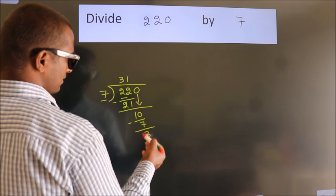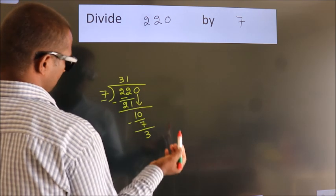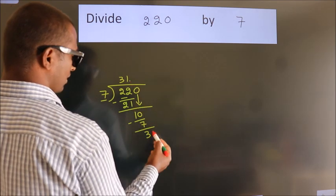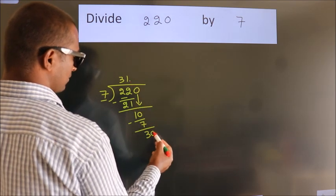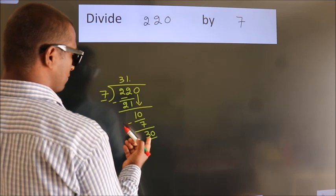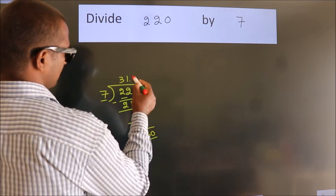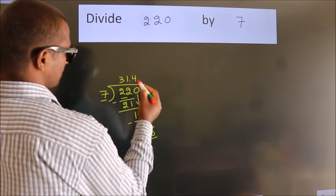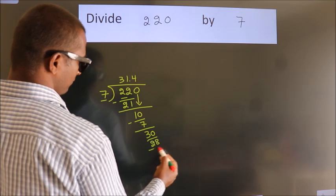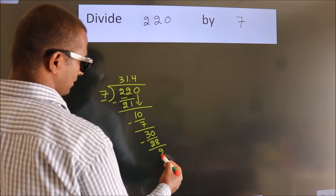After this, there are no more numbers to bring down. So what we do is put a dot and take 0, making 30. A number close to 30 in the 7 times table is 7 threes, 28. Now we subtract and we get 2.